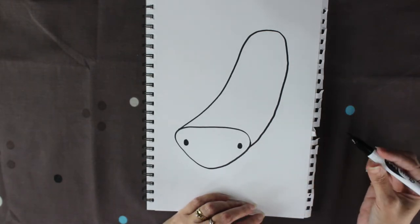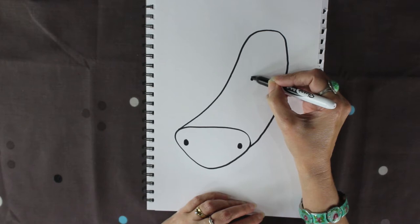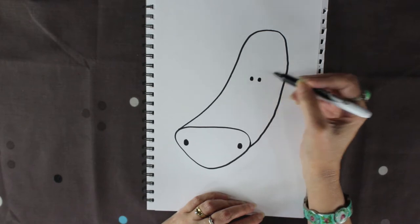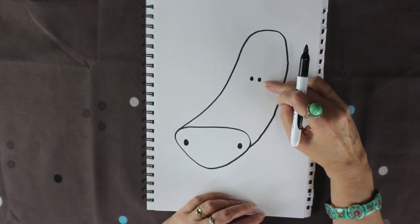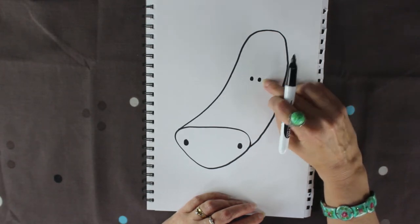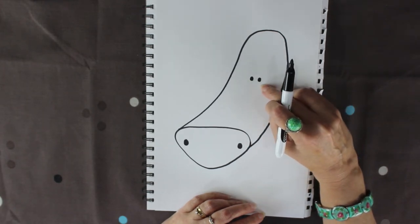All right now I'm going to just give him two eyes. I'm not going to worry too much about his eyes today because it's going to be stripes that take over. So about halfway down, maybe a little bit higher. It's depending where you want to put the eyes. I'm going to put two dots for his eyes here.